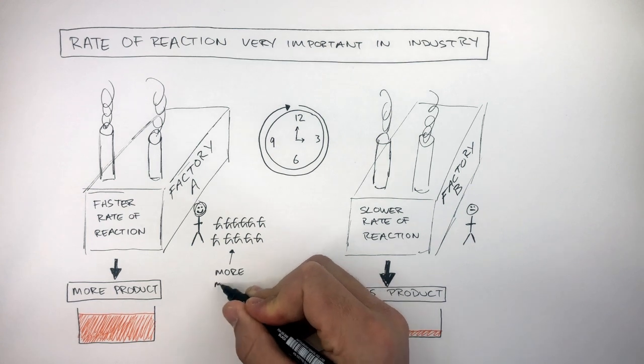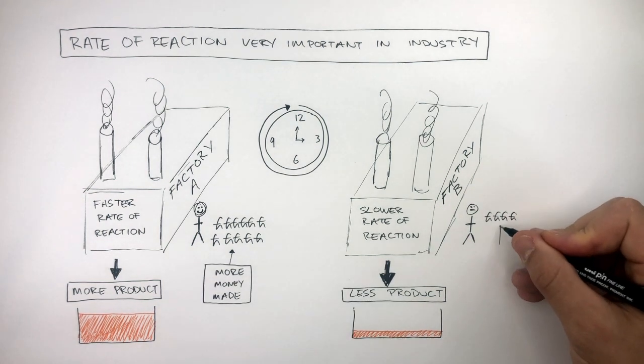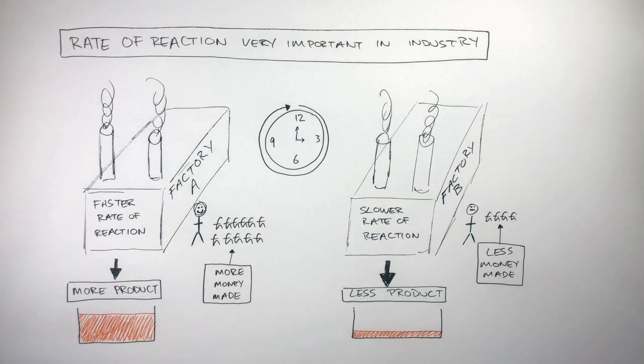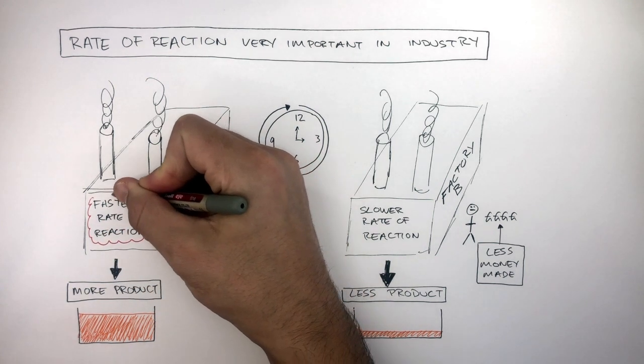So, they have more money made. Whereas, factory B have less product to sell, so earn less money. They have less money made. So, we can see how a faster rate of reaction is very important in industry.